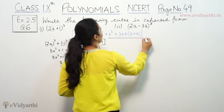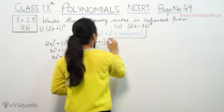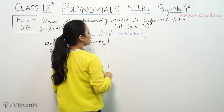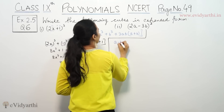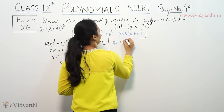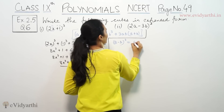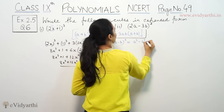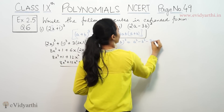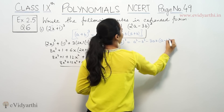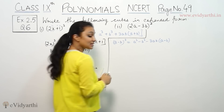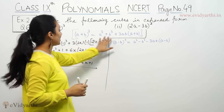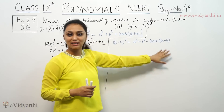Now we have another part. When we have (a minus b) whole cube, the identity is: a cube minus b cube, and all the same signs but with negative sign where applicable.